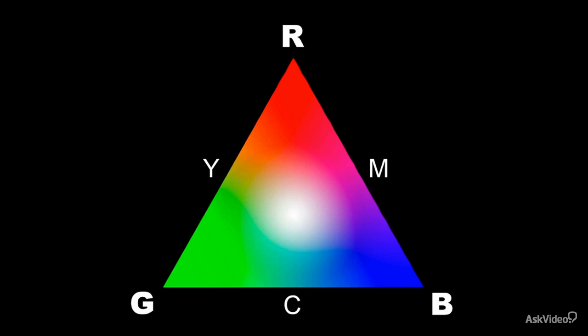So this triangle shows you all the colors you can mix using RGB. However, if you're dealing with a CMYK color, the more pigment you add, the darker the combination becomes.